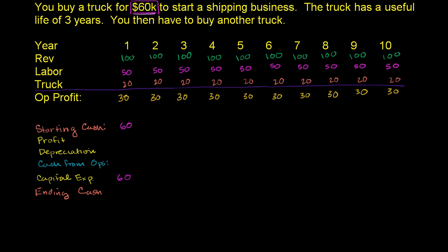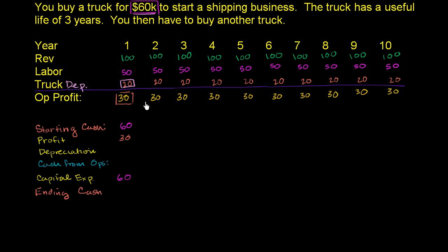Our profit in the first period is $30,000. We're assuming nothing shady is happening with accounts payables or accounts receivables — that they're not changing over the course of the year. Then we have the depreciation. The truck depreciation is not just the full expense value of the truck; we're spreading that cost over three years. So $20,000 over three years is the life of that truck, meaning the depreciation in each period is $20,000.